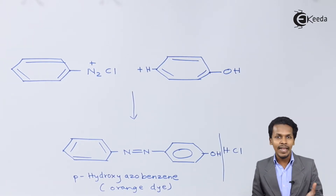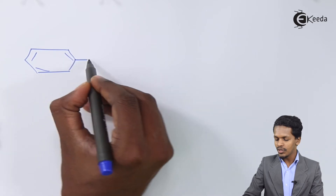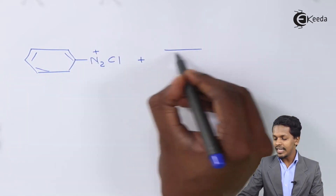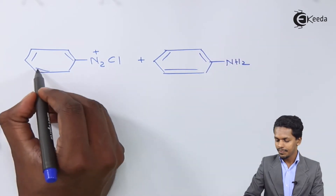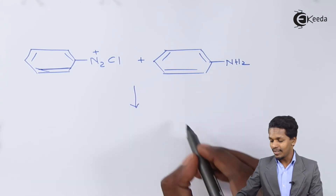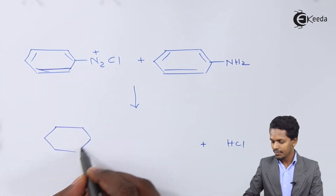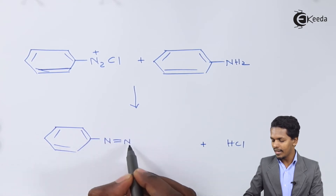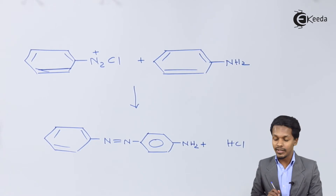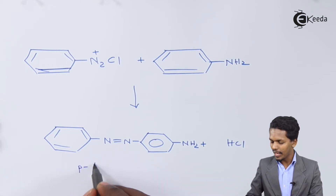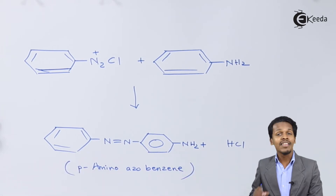For another example, consider the same reactant — benzene diazonium chloride — but this time we treat it with aniline (NH₂). HCl is removed as a byproduct. The main product is a benzene ring connected through an azo group (N=N) to another benzene ring that has an NH₂ group attached. The name of this product is para-aminoazobenzene, and it is a yellow color dye.